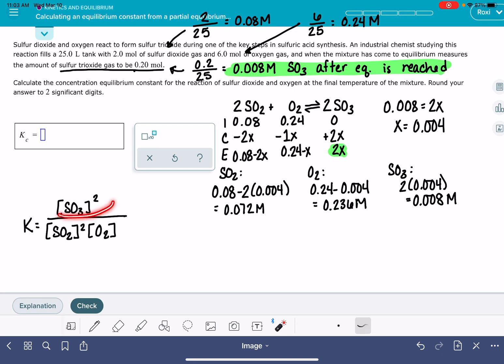What we're going to do is fill in, in this equilibrium expression, we're going to fill in these actual numerical values for each one of these substances. The SO3 is 0.008, and that's going to be squared. The SO2 is 0.072, also squared, and the O2 is 0.236.